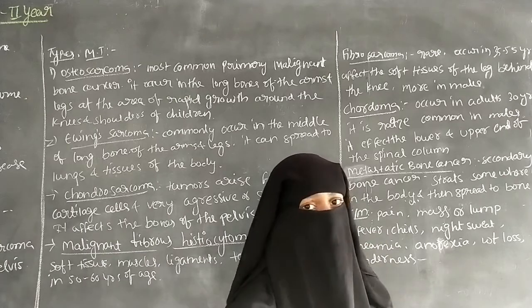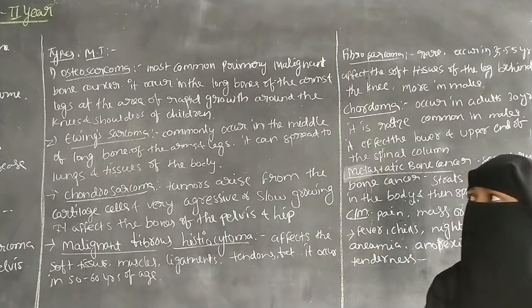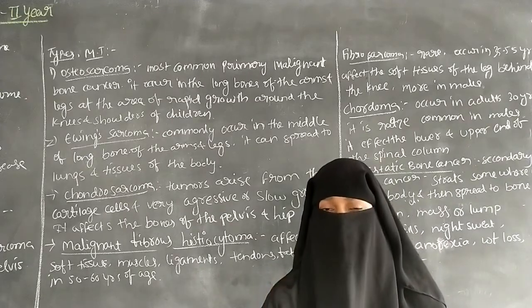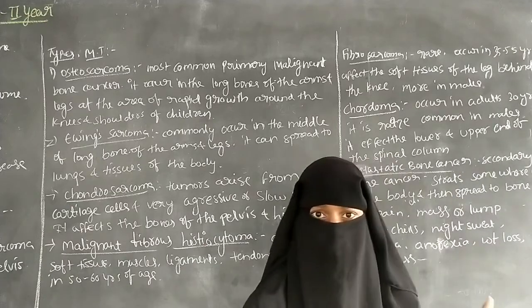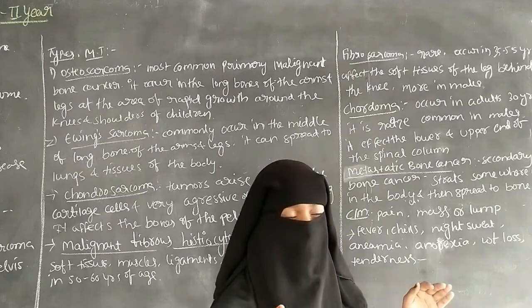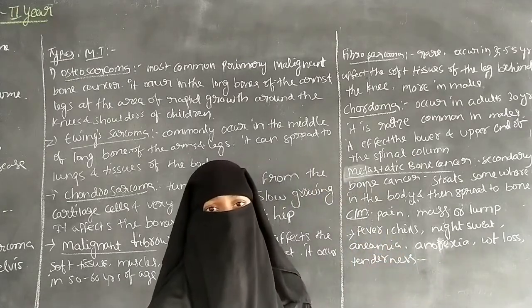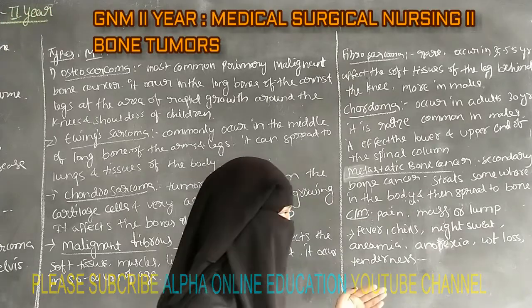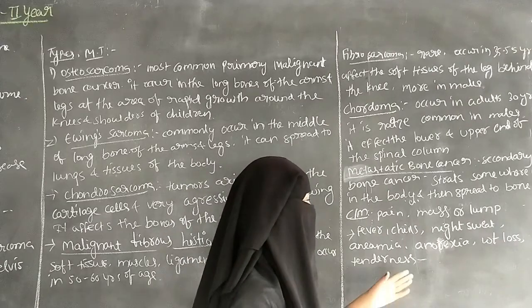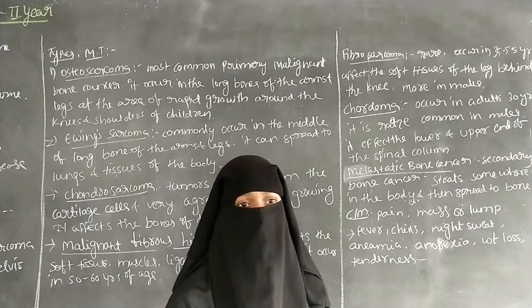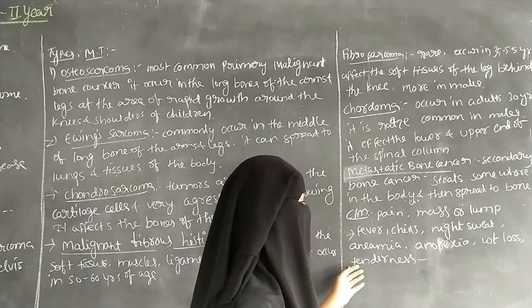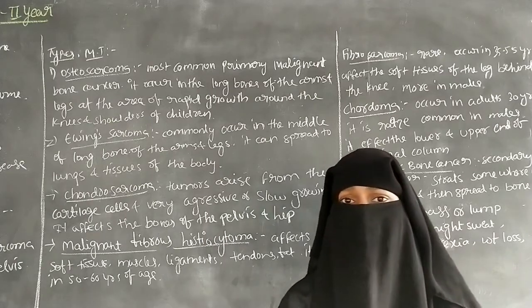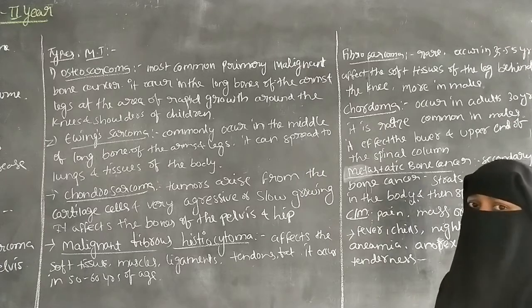The clinical manifestations of bone tumors include pain, and a mass or lump that can be palpated by the fingers. The patient may also have fever, chills, night sweats, anemia with decreased hemoglobin, anorexia or loss of appetite, weight loss, and tenderness — where touching causes severe pain.